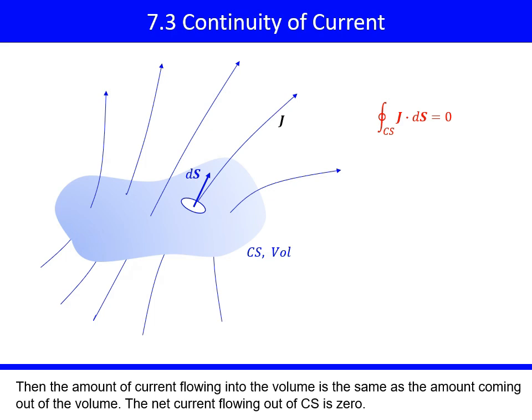Then the amount of current flowing into the volume is the same as the amount coming out of the volume. The net current flowing out of CS is zero.